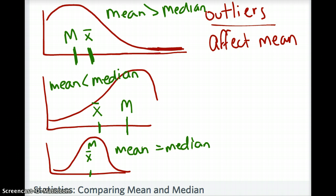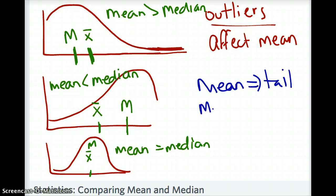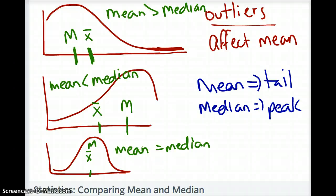To summarize: mean is greater than median when it's right skewed, and mean is less than median when it's left skewed. A useful way to remember this is that the mean is closer to the tail of your distribution, and the median is closer to the peak of your distribution.